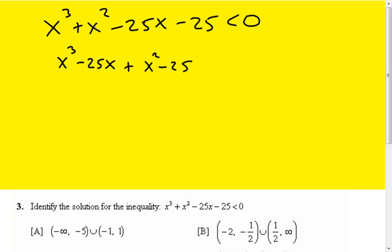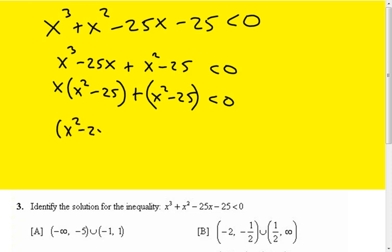So I'm going to write them in a different order. I'm going to factor out an x in the first two terms, and now you can probably see that we have x squared minus 25 twice. I'm now going to factor that out, and I have x left from the first term, and I have just a one left in this part over here.